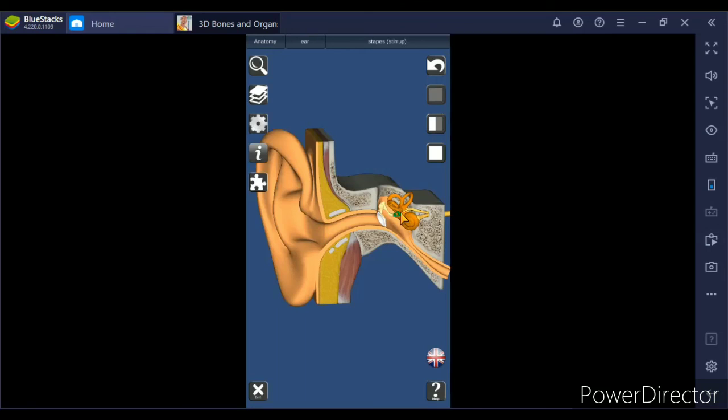The vibrating ear ossicles transmit the vibration to the membrane of oval window which in turn sets the fluid contained in cochlear canal also into vibration. The vibrating movement of the fluid stimulates the hair-like process of sensory spot of cochlea. And that's why the impulses are transmitted to the brain via auditory nerve.